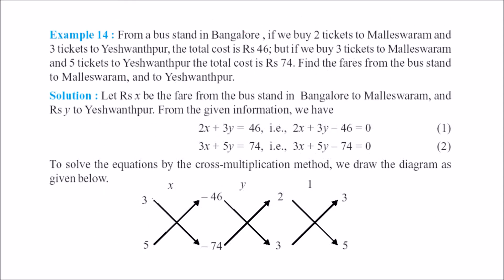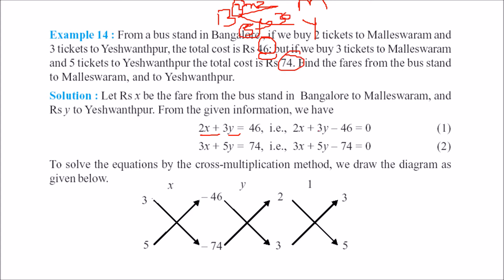Let's take a tickets example. You're in Bangalore and can go to Maleshwaram or Yeshwantpur. If you buy 2 tickets to Maleshwaram (x) and 3 tickets to Yeshwantpur (y), the cost is 46, so 2x plus 3y equals 46. If you buy 3 tickets to Maleshwaram and 5 tickets to Yeshwantpur, the cost is 74, so 3x plus 5y equals 74.